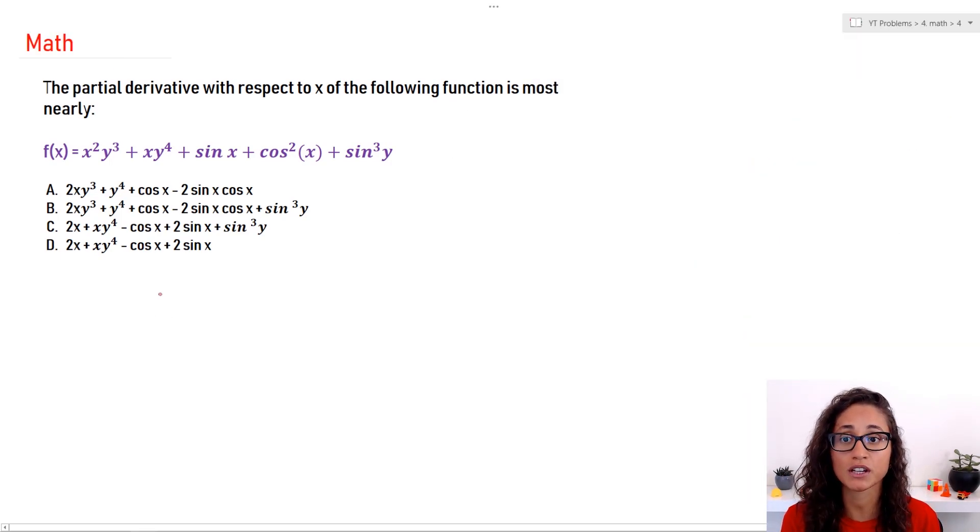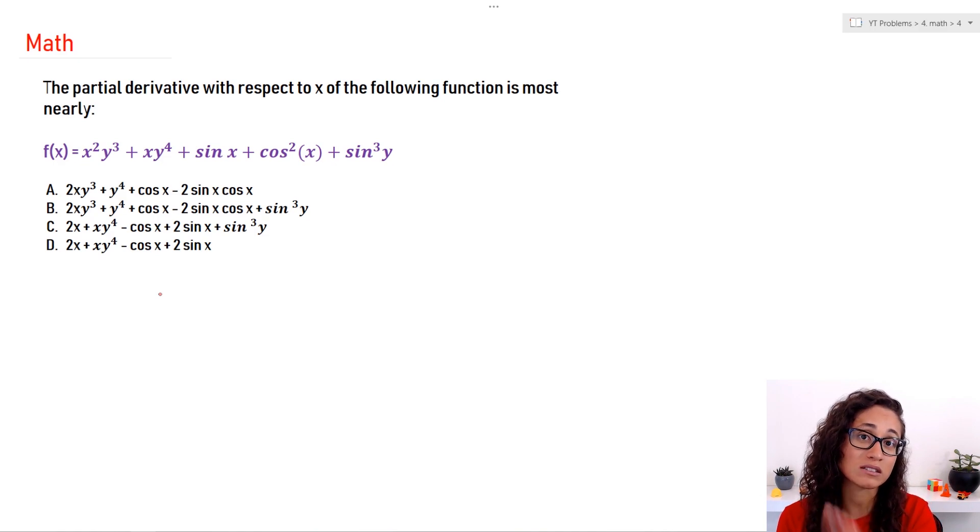To take the partial derivative with respect to x, meaning if I have y or z, those are going to be considered as a constant because I'm not taking the derivative with respect to y or z. I'm only taking the derivative with respect to x. Everything else, any other variable, is going to be considered as a constant. And derivative of a constant is usually zero.